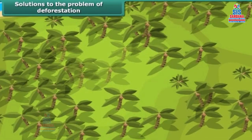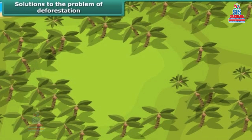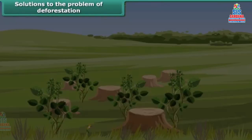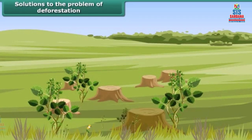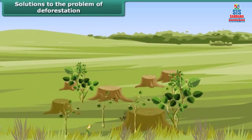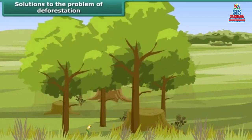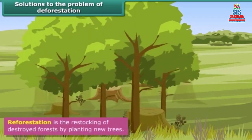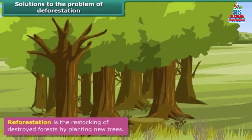But recycling paper is a measure just for controlling deforestation temporarily. Can you suggest any permanent solution to the problem of deforestation? Yes, it is reforestation. Reforestation is the restocking of destroyed forests by planting new trees.